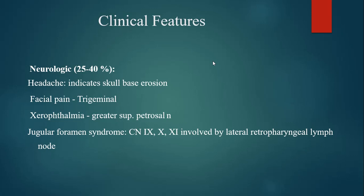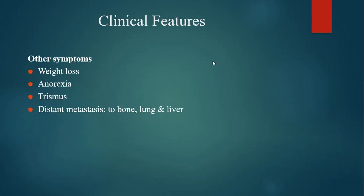Jugular foramen syndrome involves the 9th, 10th, and 11th cranial nerves due to the lateral retropharyngeal lymph nodes. Other symptoms include weight loss, anorexia, and distant metastasis to bone, lung, and liver.